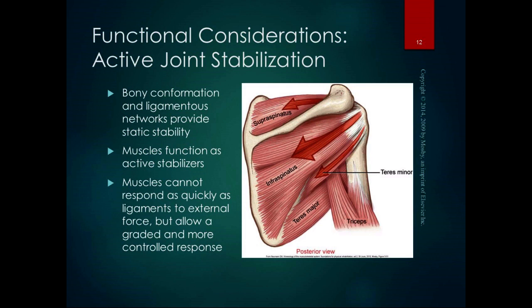Bony conformation and ligamentous networks provide static stability for joints, but muscles actually function as active stabilizers. Bones and ligaments provide static stability, but as we're moving the muscles have to adjust to actively stabilize joints. Muscles can't respond as quickly as ligaments to external force, but they allow a graded and more controlled, dynamic response. A lot goes into stabilizing our joints — some of it is connective tissue, some of it is muscle. We will talk about what goes into stability and mobility of each joint because we need both.